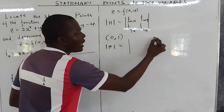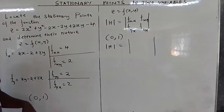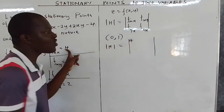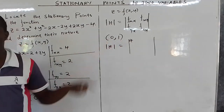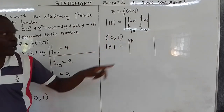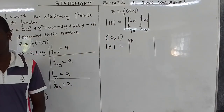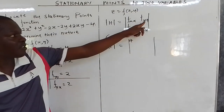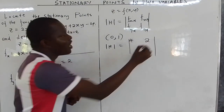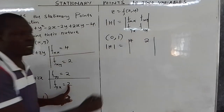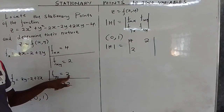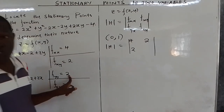We evaluate the determinant of the Hessian matrix at the point (0, 1). We substitute: f_xx equals 4, f_xy equals 2, f_yx equals 2, and f_yy equals 2. Since none of these second partial derivatives depend on x or y, the values remain constant regardless of the point substituted.